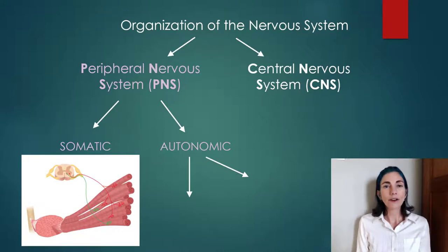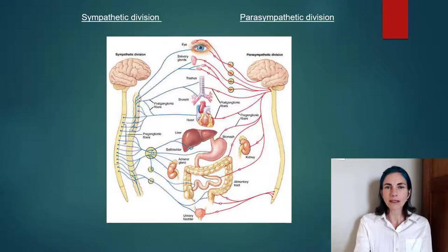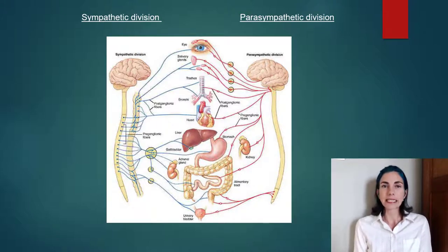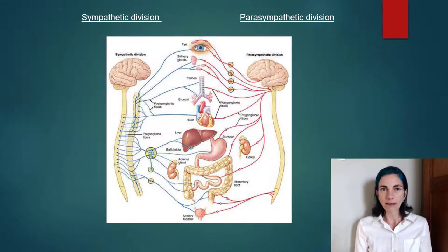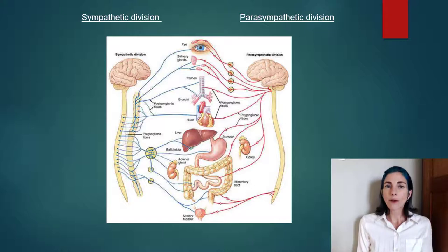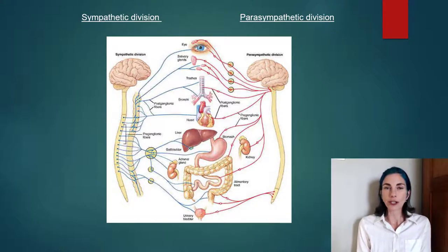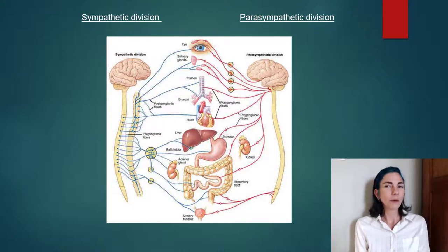The autonomic nervous system is further broken down into two subdivisions: the sympathetic and parasympathetic nervous systems. The sympathetic and parasympathetic nervous systems are also anatomically distinct — they come off different areas of the spinal cord, use what are called ganglia, and tend to innervate a similar array of organs. The sympathetic nervous system is most often associated with fight or flight.